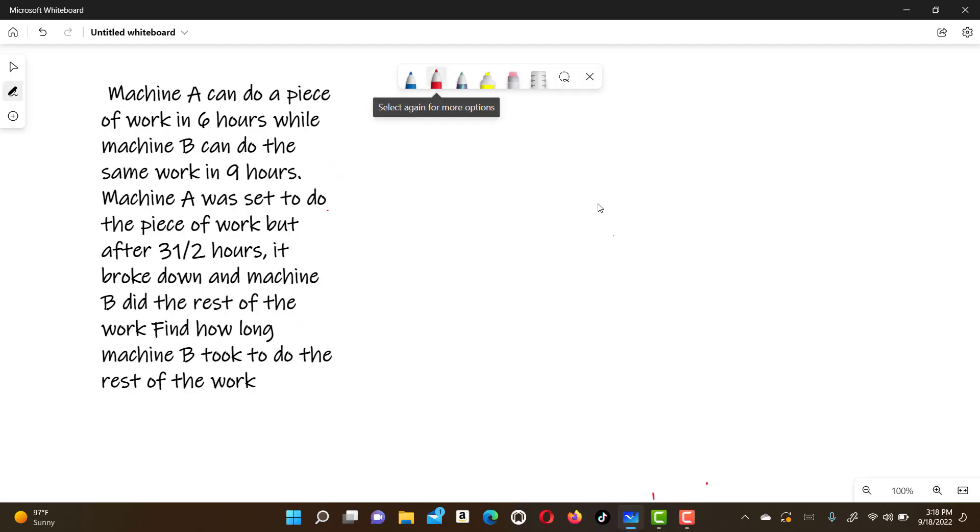Machine A can do a piece of work in six hours while machine B can do the same work in nine hours.